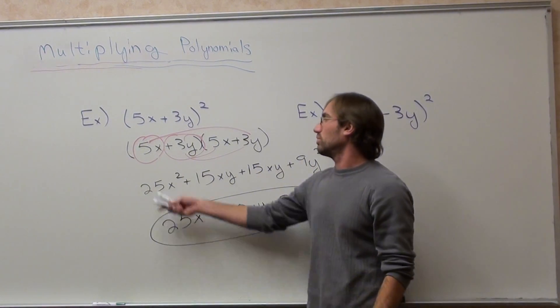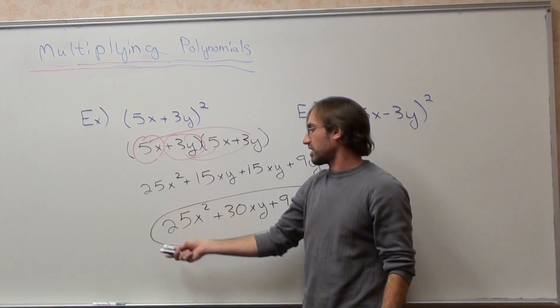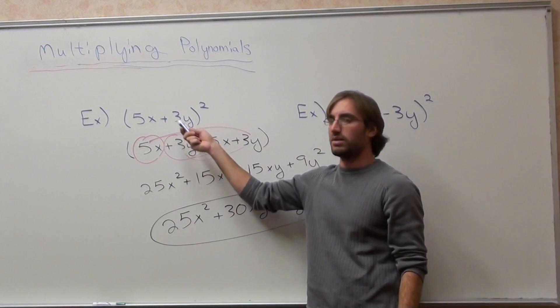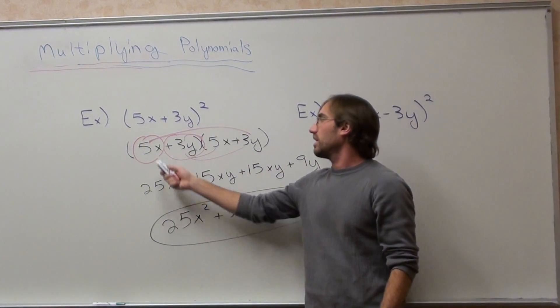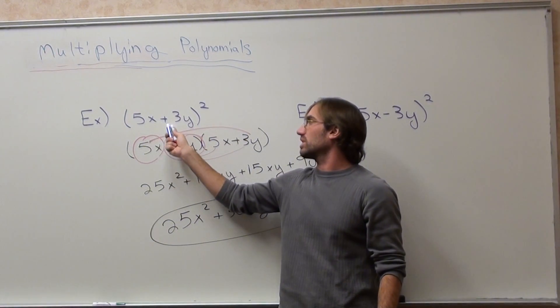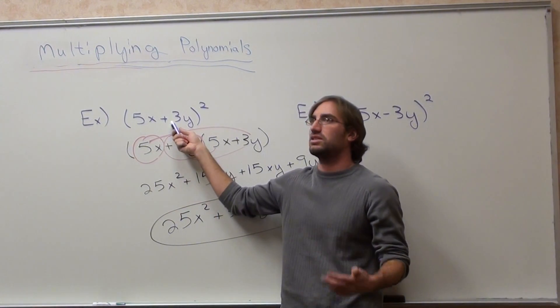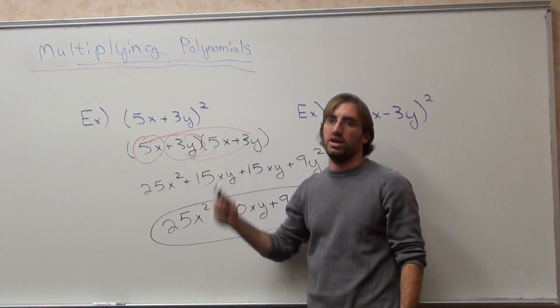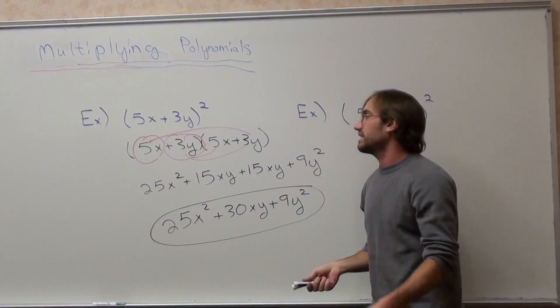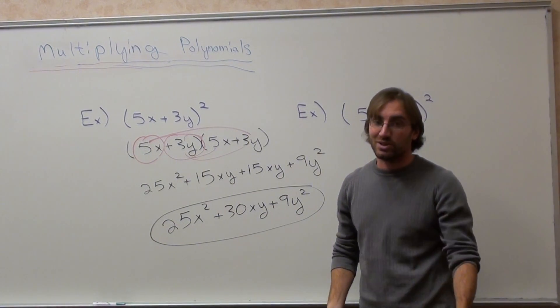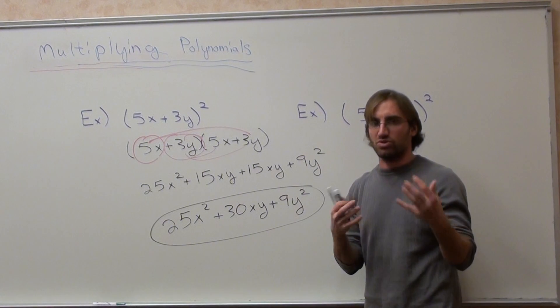You take 5x times 5x, 25x squared. You take 3y times 3y. That's 9y squared. And you take 5 times 3xy, and you double it. So 5 times 3 is 15. Double it. That's 30xy. That's why. That's the relationship. It's actually considerably better when you factor it. That's where it's really useful. But multiplying it.